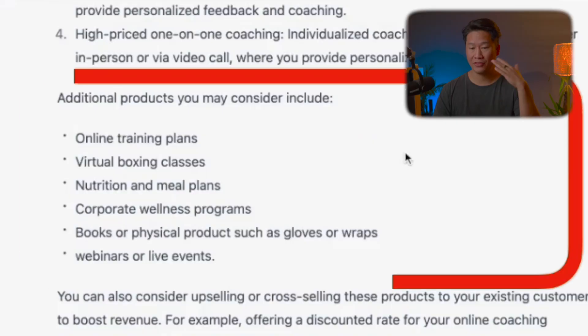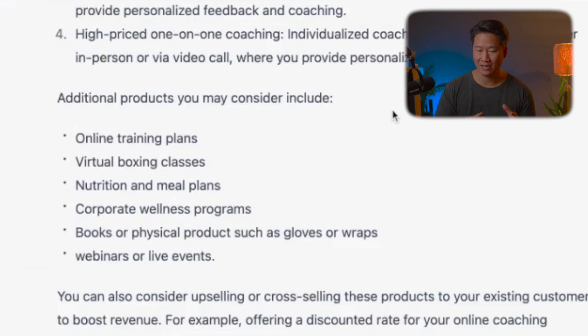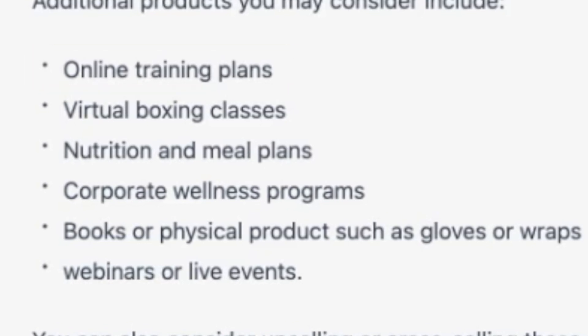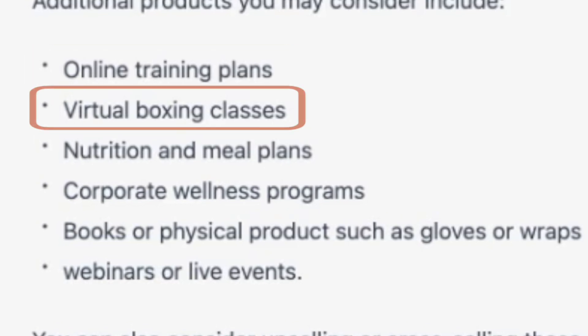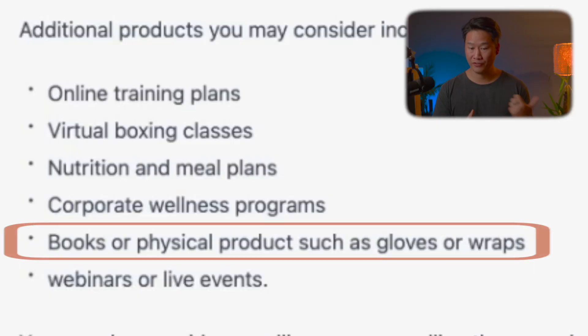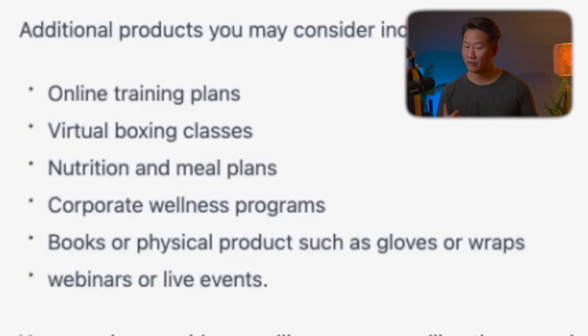Those are the things I thought of — and here's what ChatGPT added as additional products to consider: online training plans, virtual boxing classes, nutrition and meal plans — which I think would be a great addition if it's an easy add-on or service that everyone should take advantage of — books or physical products like gloves or wraps, and webinars or live events. This was incredible, and it came from just one prompt.